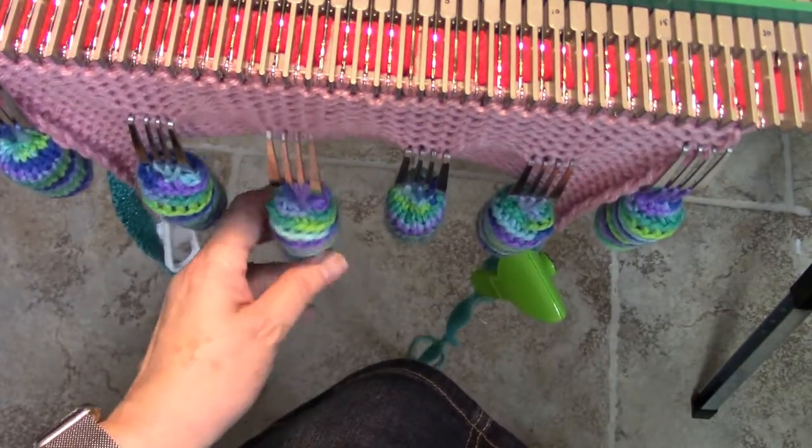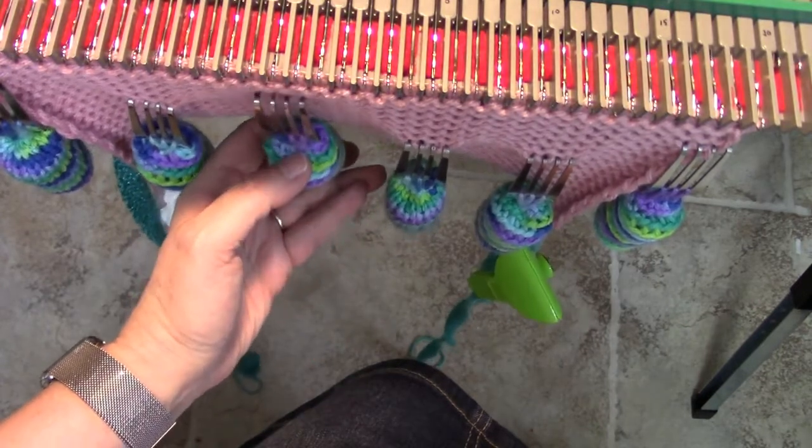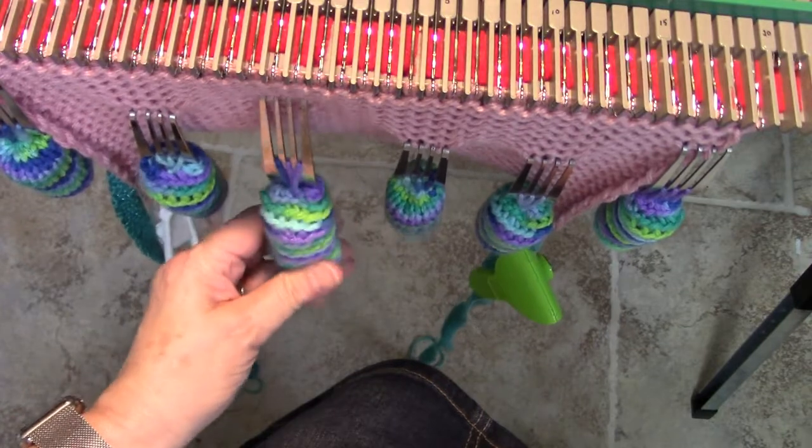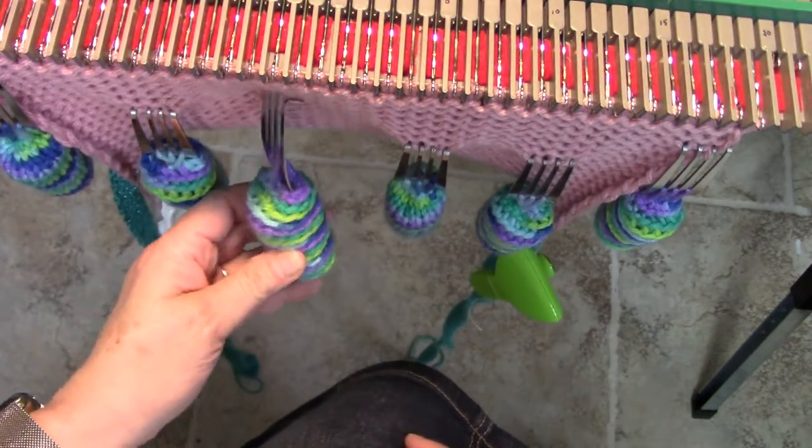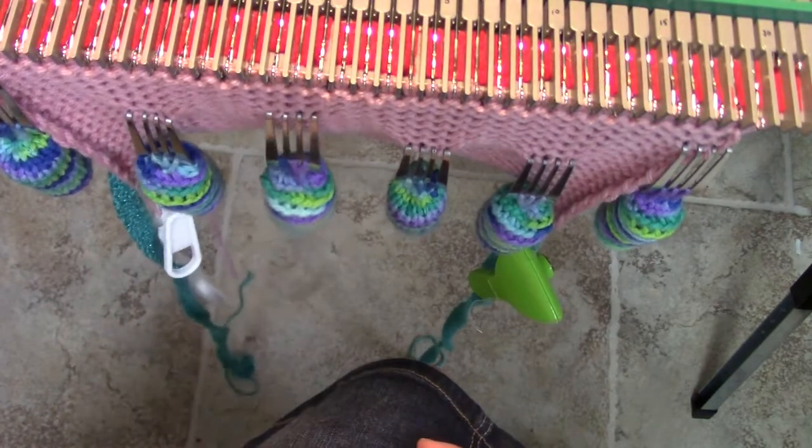Obviously, these are homemade weights, and they cost about 60 cents, I guess, a piece to make if you buy the cheap forks. And there's about 30 pennies in there for weight. There's other videos online on how to make those.